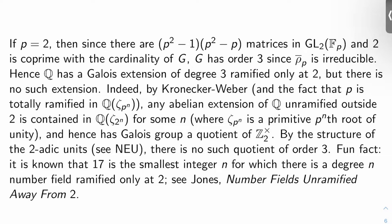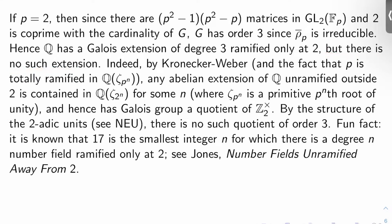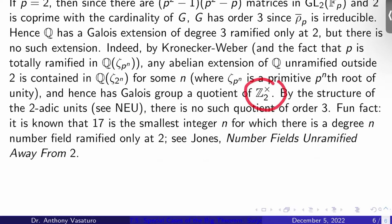Now, if you translate this into Galois theory, what this says is Q has a Galois extension of degree 3 ramified at only 2, because 2 is the only prime that rho P 2 is ramified at. And my image has order 3, so my extension has degree 3. This is just the fundamental theorem of Galois theory. The problem is there is no such extension, and you can use class field theory to see this. By Kronecker-Weber, and the fact that P is totally ramified in the extension Q adjoin zeta sub P to the n, any abelian extension of Q unramified outside 2 is contained in Q adjoin zeta sub 2 to the n for some n.